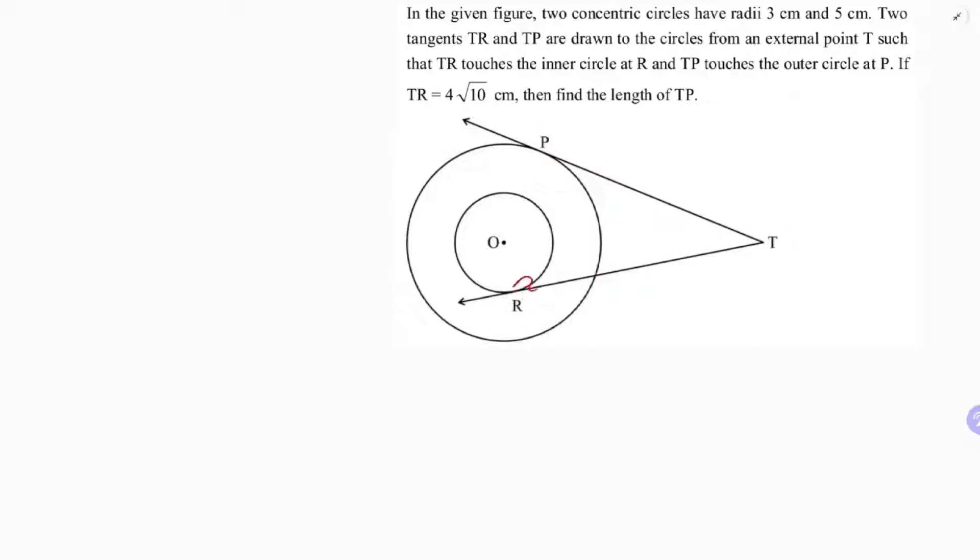If TR is 4√10 cm, then find the length of TP. I will consider TP as x.